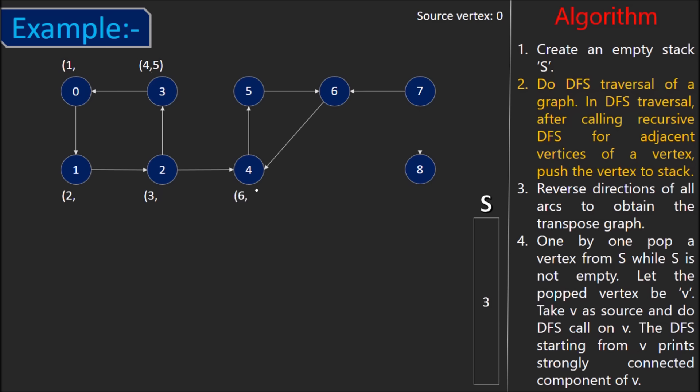So, 4 is visited at t equals 6. 5 at t equals 7 and 6 at t equals 8. But, 6 has no unvisited neighbors. So, its finish time would be t equals 9 and 6 will be added to the stack. Note that 7 is not a neighbor of 6 because there is no directed edge from 6 to 7. At t equals 10, 5 gets finished because it doesn't have any unvisited neighbors either. Add 5 to the stack.